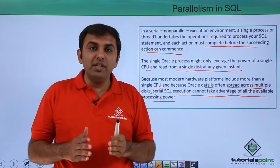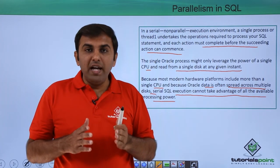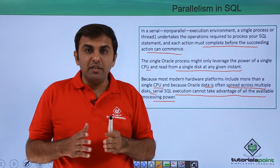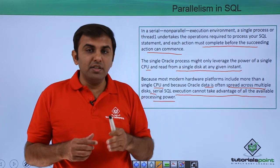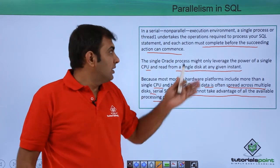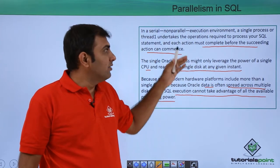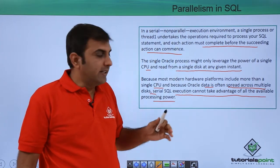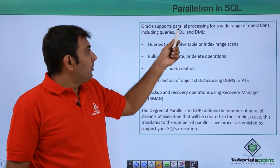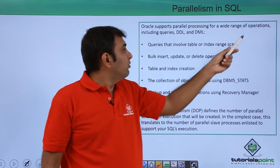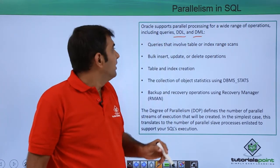But if you execute that query in five parallel streams, it reduces the SQL retrieval time by up to five times — that is, one-fifth of the original time. Oracle supports parallel processing for a wide range of operations including DDL and DML.